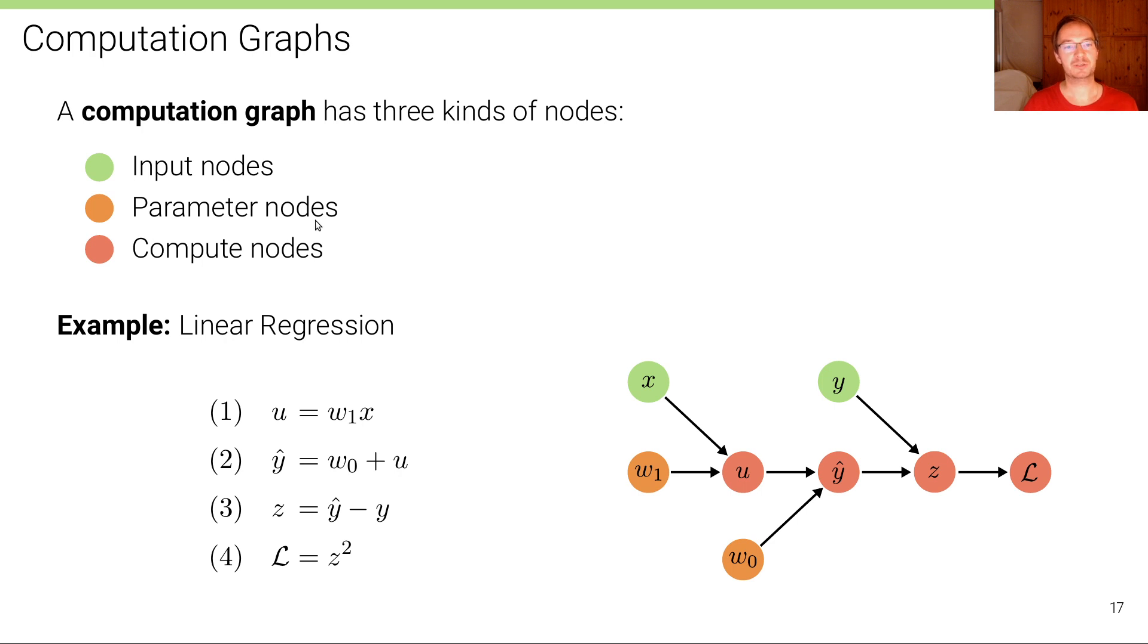The parameter nodes is where the parameters of the model are stored, and this is what we want to update. When computing backpropagation, when backpropagating gradients, we are interested in—well, we need to backpropagate gradients for all nodes, but what we're really interested in the end is the gradients for these parameters, because this is where the updates are applied to. This is what we want to estimate. Finally, we have the compute nodes, which could be the final node is loss function or intermediate compute nodes that take inputs, for instance input nodes or previous compute nodes or parameters, and produce a result.